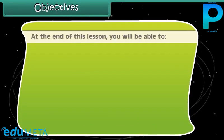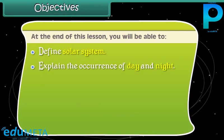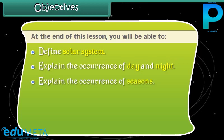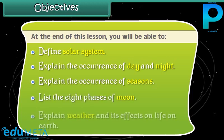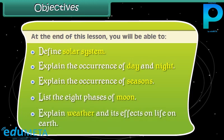At the end of this lesson you will be able to: define the solar system, explain the occurrence of day and night, explain the occurrence of seasons, list the 8 phases of Moon, and explain weather and its effects on life on Earth.